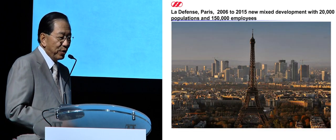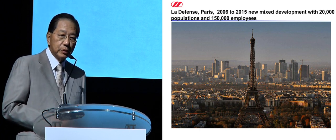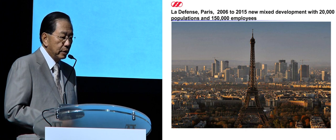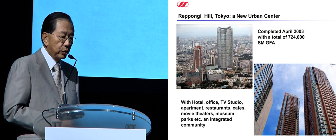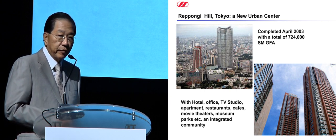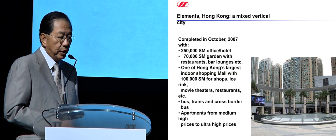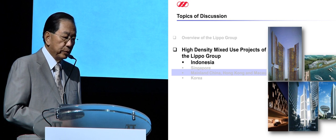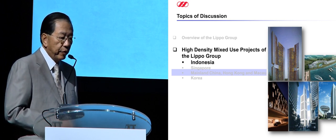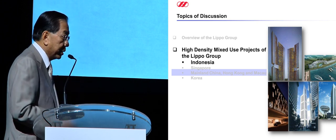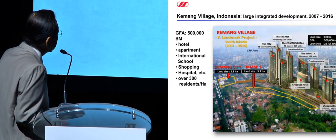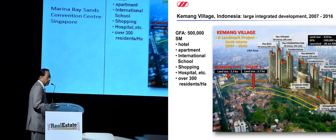Good examples of high-density mixed-use include historic Paris neighborhoods with 20,000 population within about 1.8 kilometers, Roppongi Hills in Tokyo which has museums, schools, and everything, and Elements in Hong Kong which is very successful with many different amenities. In Indonesia, Lippo has a very successful development called Kemang Village, started in 2007 and finished in 2016, featuring hotels, an international school, a shopping mall, and a hospital — over 300 residents per hectare.